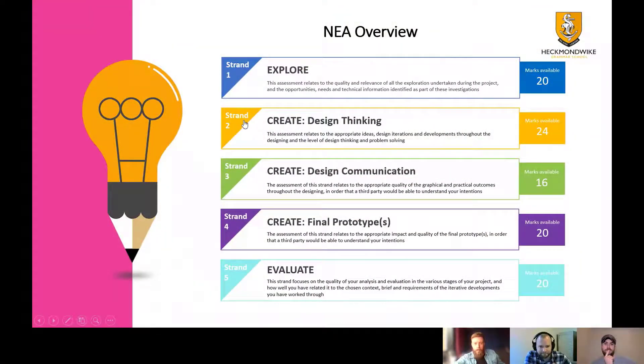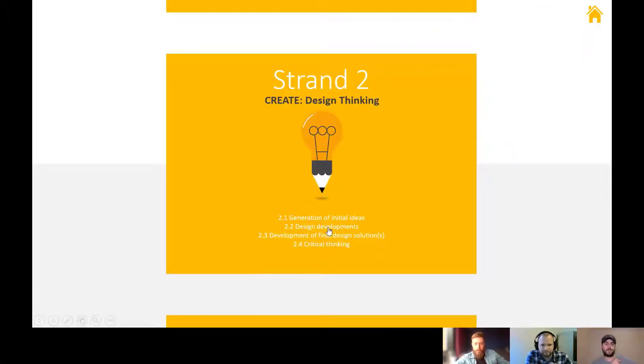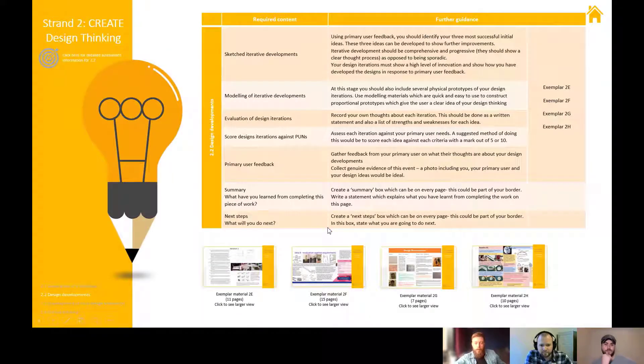If we take a look at section 2.2, it's all about taking those initial ideas and modifying them, doing several different iterations to try to improve these designs. It's through a variety of different medium, really, so we want to see evidence of sketching, some 3D modeling, computer modeling, be that SolidWorks, SketchUp, Tinkercad, whichever you're most comfortable with, plus some three-dimensional prototypes as well.